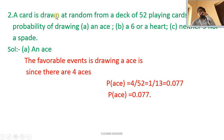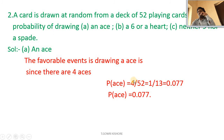Second problem: a card is drawn at random from a deck of 52 playing cards. What is the probability of drawing (A) an ace card, (B) a 6 or heart, and (C) neither 9 nor a spade? Part A — an ace card: since there are 4 ace cards, probability of ace equals 4 by 52, equal to 1 by 13, or approximately 0.077.